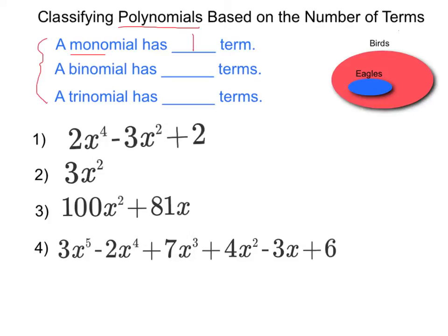The prefix bi means two. Like a bicycle has two tires. So every time somebody talks about a binomial, all they're really saying is that the polynomial has two terms.